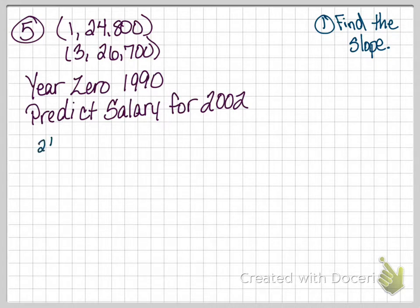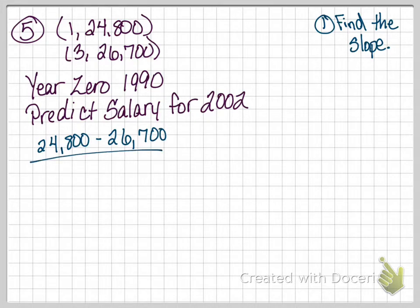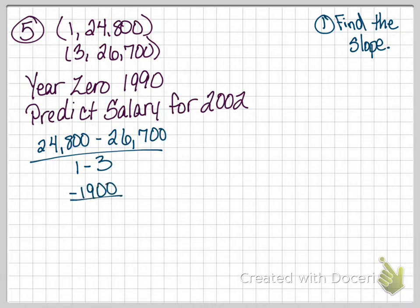Finding the slope using those two points: $24,800 minus $26,700 over 1 minus 3. That gives negative $1,900 over negative 2. A negative over a negative is positive, so the slope is $1,900 divided by 2, which is $950. The rate of change is $950.